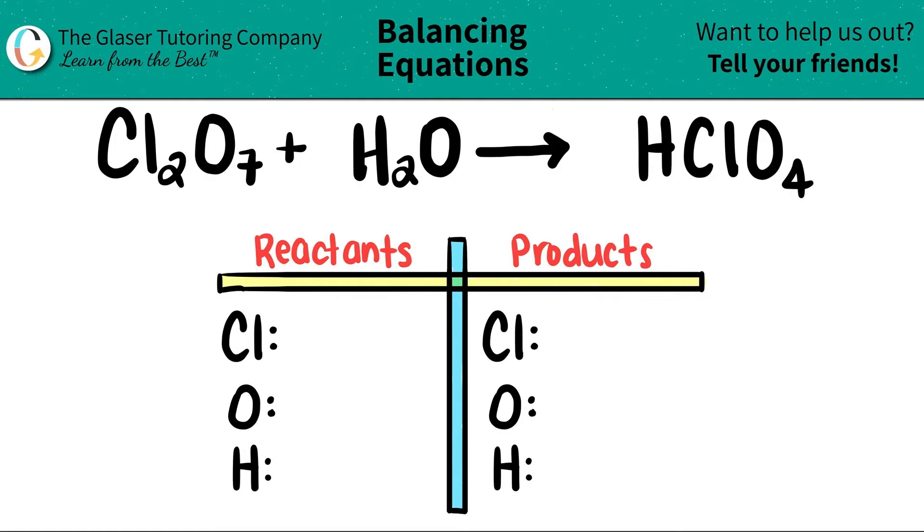I already wrote out our little balancing chart that will help us greatly out here, as well as the elements that I see on both the left and right sides. All we have to do is just start numbering how many we have in the beginning, and then we can get to balancing.